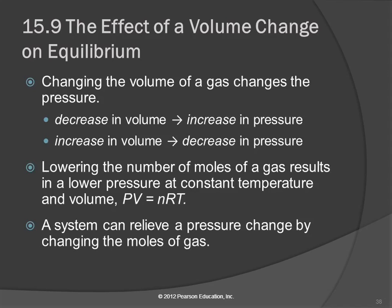If we increase the volume of the gas, then the pressure is decreased. And if we lower the number of moles of a gas, that affects the pressure as well. If we take some particles out, then the pressure goes down. Our friend PV = nRT tells us: if the number of moles goes down, the pressure goes down; if the volume goes up, the pressure goes down. So the system can relieve a change in pressure by changing the number of moles of gas.